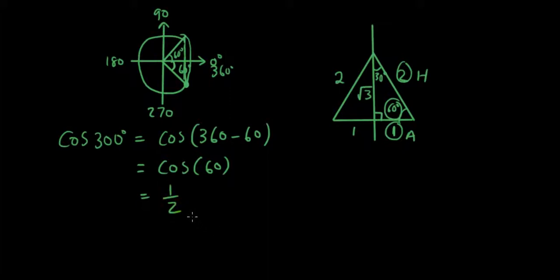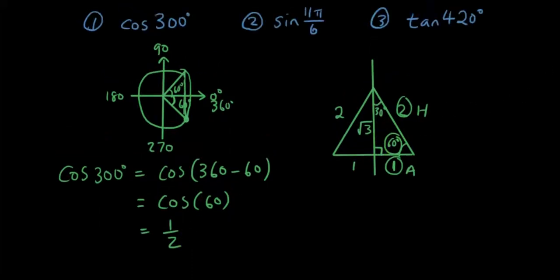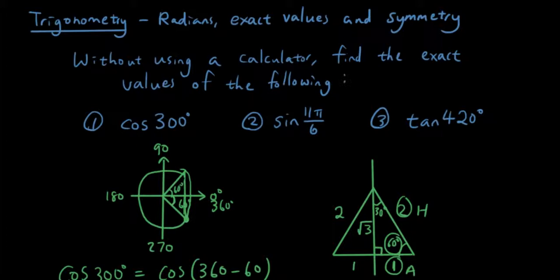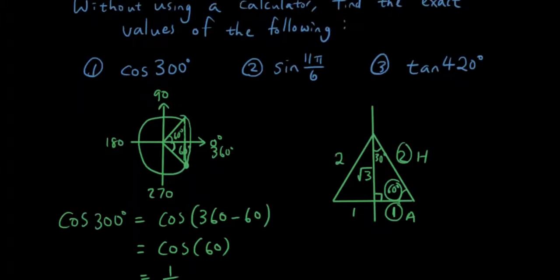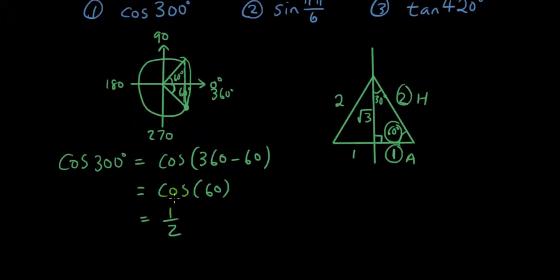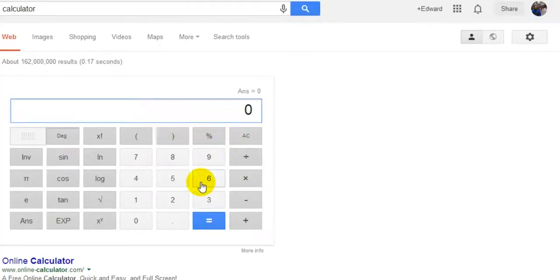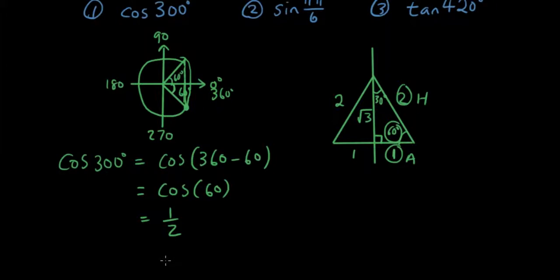Now you can always check it on your calculator. But you have to show working out because it says without using a calculator. But once you find your answer, it is no harm to then check it with your calculator. So let's do that. So let's type in cos 60. And the answer is 0.5. So we have it correct. Let's do number 2.